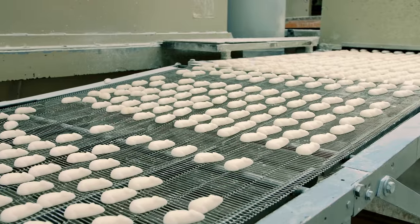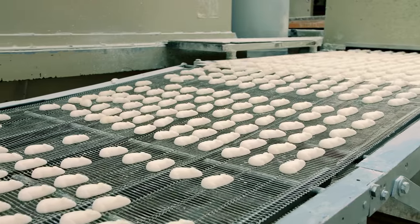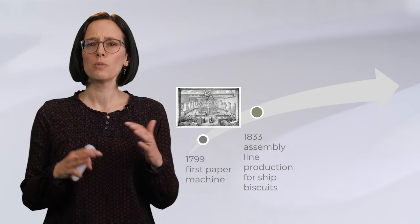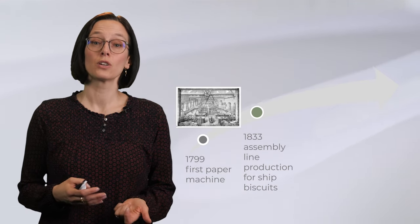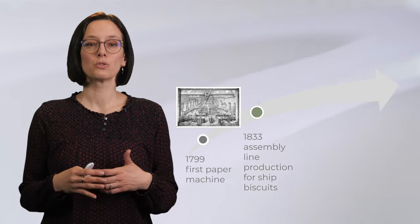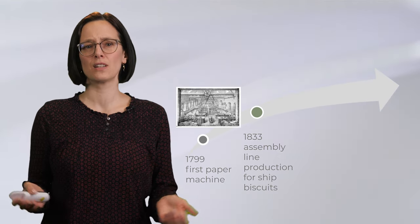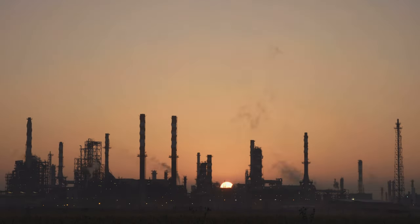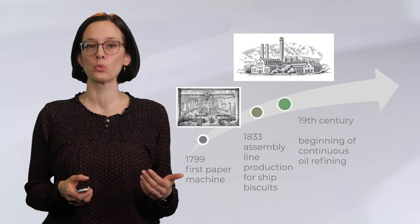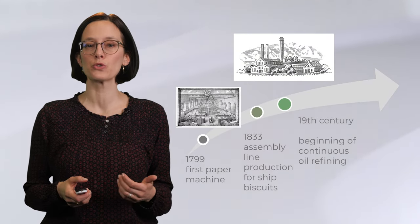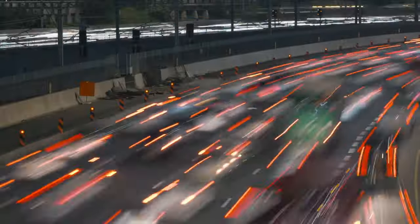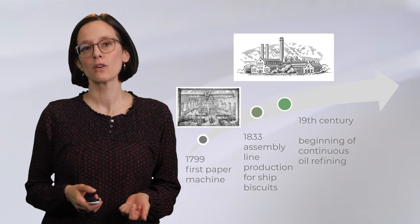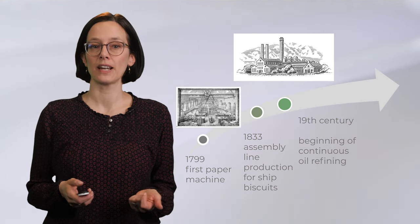The first assembly line production for ship's biscuit was opened in 1833. Nowadays almost all packaged food is produced continuously, leading to the production of food in a fast and efficient way. In the 19th century the first oil refinery was opened, which also allowed us to produce fuel for a large number of people.